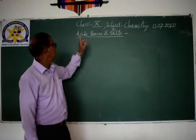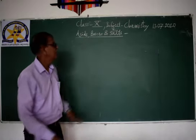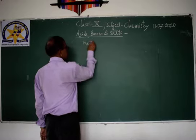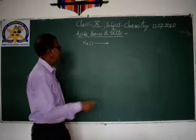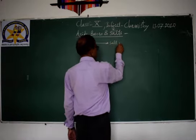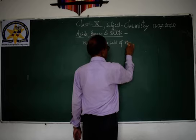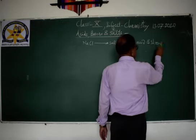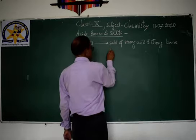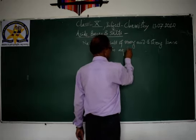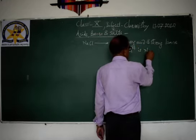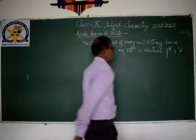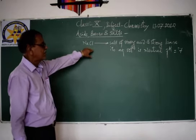In the last period, we were studying about acids, bases and salts. In acids, bases and salts, we have seen various salts. For example, NaCl. NaCl is sodium chloride and it is a salt of strong acid and strong base. And it gives a neutral solution.